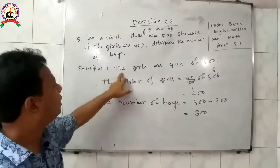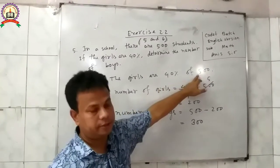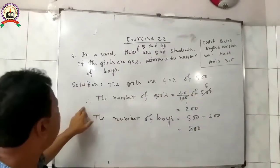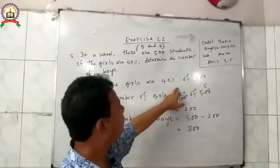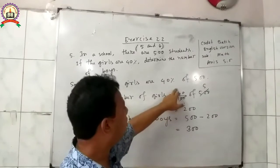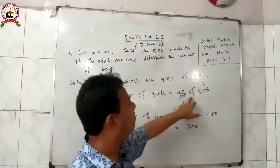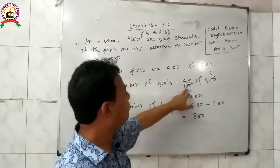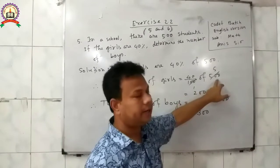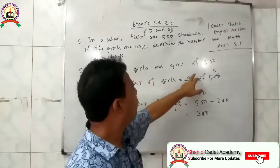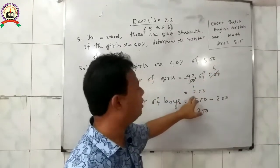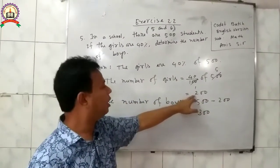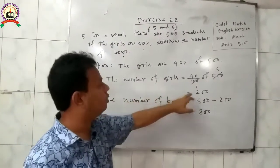Solution: The girls are 40% of 500. So, the number of girls equals 40 divided by 100 — percent means divided by 100 — of total number 500. If we calculate, 500 divided by 100 gives us 5, and 40 into 5 equals 200. So, the number of girls equals 200.